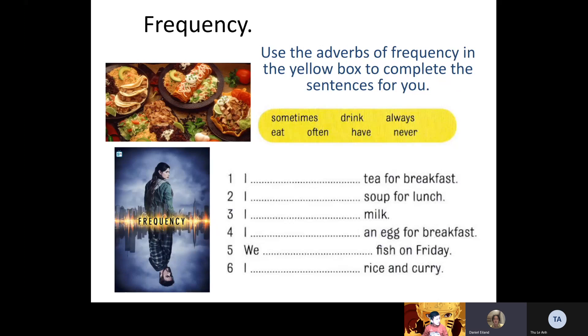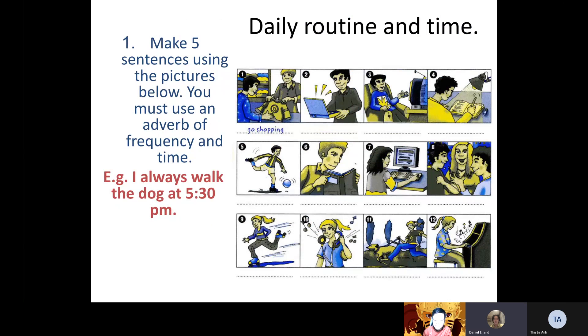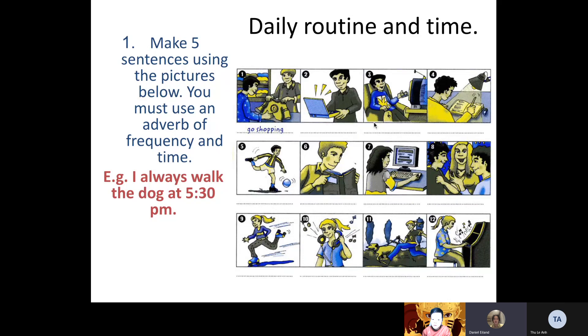Okay, here is the next part of the test. So just to start off with, can you tell me what is the person doing in picture three? Picture three, the boy is watching TV. The boy is watching TV. So what I want you to do in the test is to make five sentences using the pictures, using these 12 pictures. You must use an adverb of frequency, like sometimes, never, always, often, and also a time. For example, you can say I always walk the dog at 5:30 PM. So it's your turn. Please say five sentences.